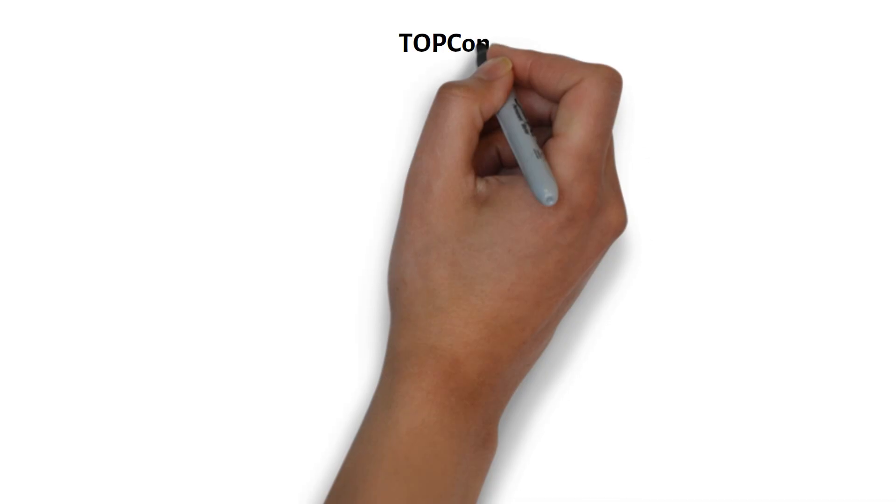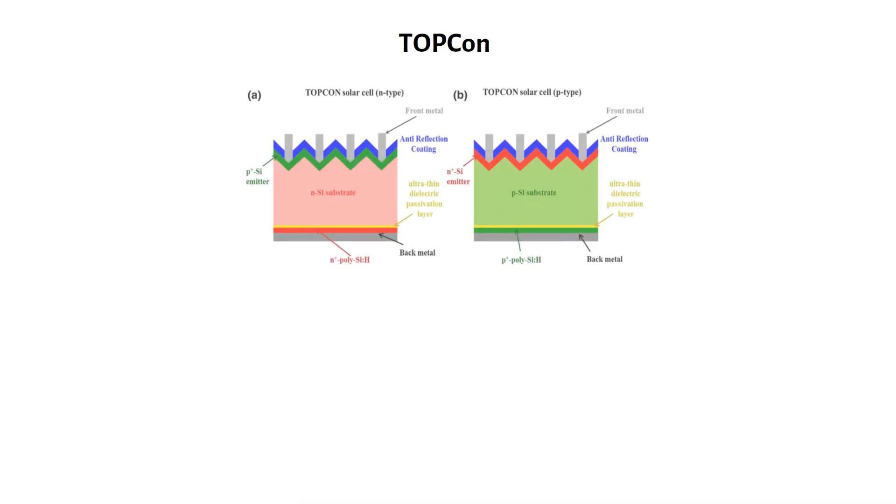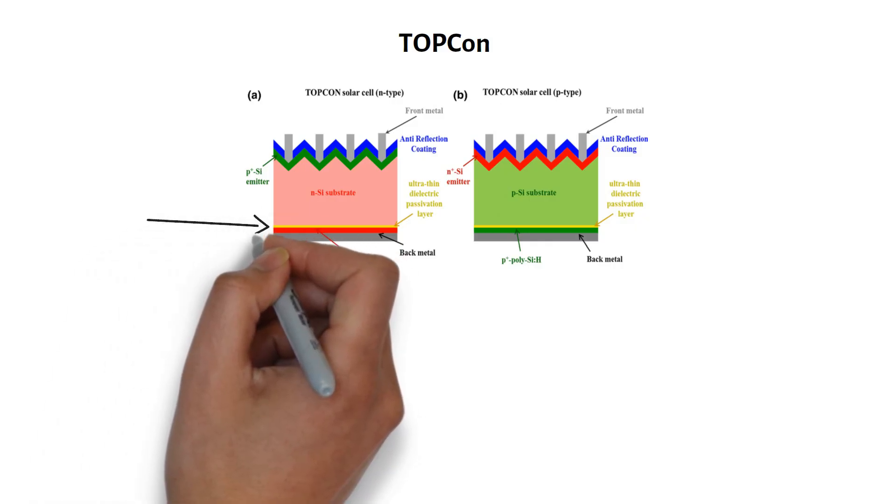Next is TOPCON, or Tunnel Oxide Passivated Contact. It's an upgrade to PERC, adding a thin oxide layer that reduces electron loss and boost efficiency. But these panels are more expensive. As you can see from this image, you can have them both in N-type and P-type solar cells, with the layer at the bottom in yellow.